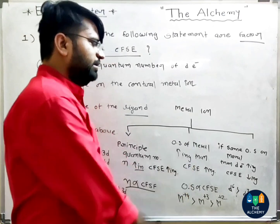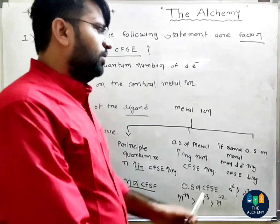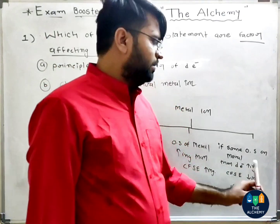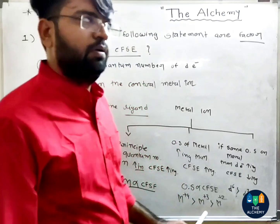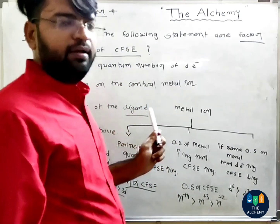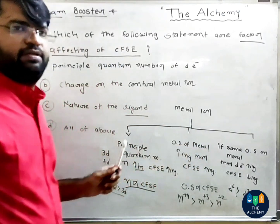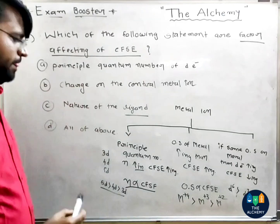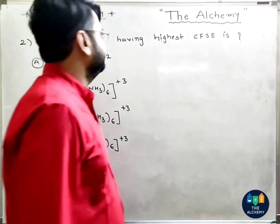To summarize: if oxidation state increases, then CFSE increases. If same oxidation state metal has more d-electrons, CFSE goes down. And for the nature of ligand: strong ligand gives high CFSE, weak ligand gives lower CFSE. So our answer is all of the above. Next question.